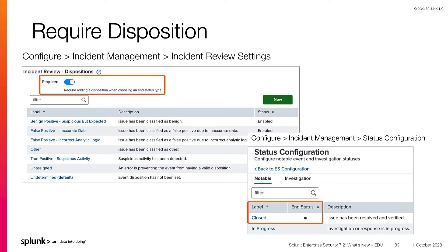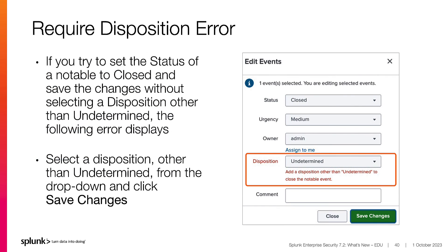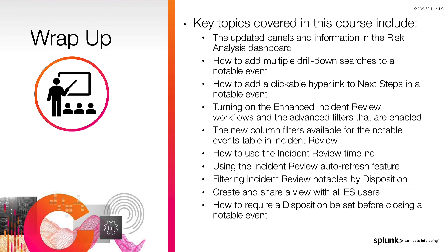By default, the end status for notable events is closed. An ES admin can change the end status under Configure, Incident Management, Status Configuration. If you try to set the status of a notable to Closed and save the changes without selecting a disposition other than undetermined, the error shown displays. Select a disposition other than undetermined from the drop-down and select Save Changes.